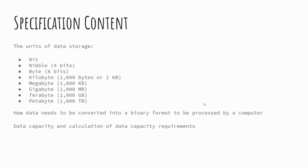The specification content we're looking at covers units of measurement: bit, nibble, byte, kilobyte, megabyte, gigabyte, terabyte, and petabyte, along with their equivalent file sizes. We'll have a look at what those actually mean.